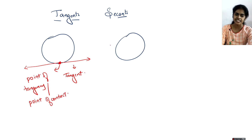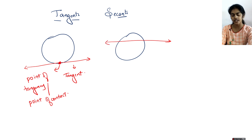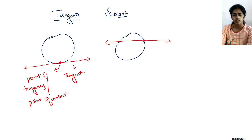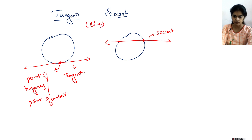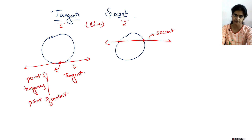Now, what is a secant? If you draw a line and it intersects the circle at two points, such a line is called a secant. So the simple difference between a tangent and a secant is: both are lines, but a tangent touches the circle at a single point and a secant intersects the circle at two points.